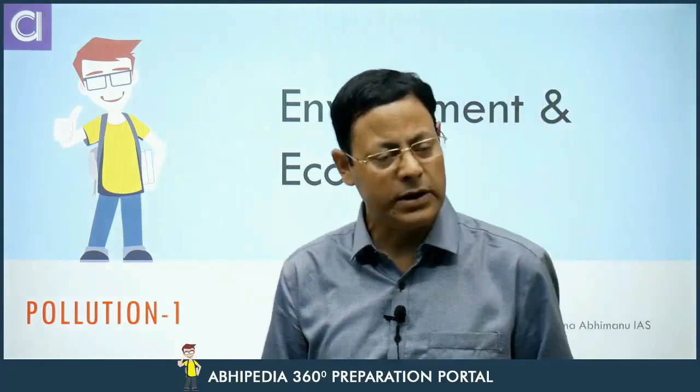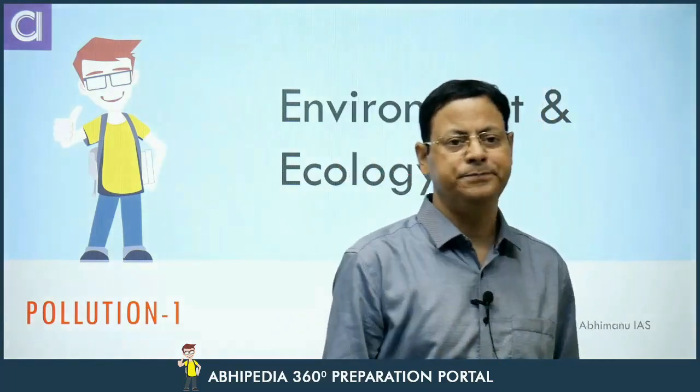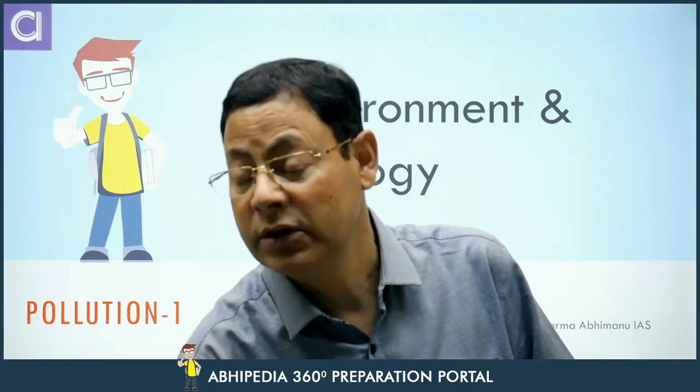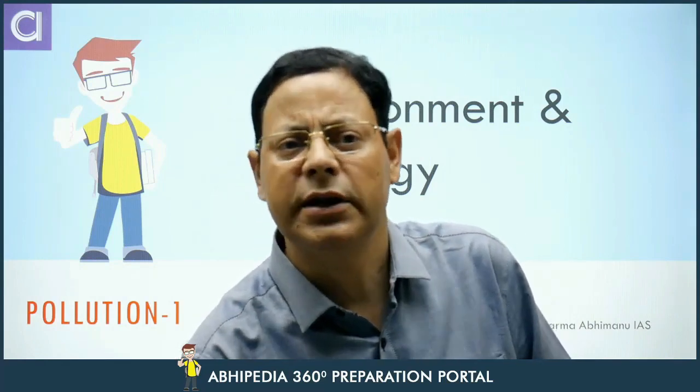That is what you call vehicular exhaust. Sulfur dioxide and nitrogen oxide — these two substances you must know about. Factories and vehicle pollution have released so much of them into the atmosphere that today they have given rise to a very disastrous phenomenon in the form of acid rain.